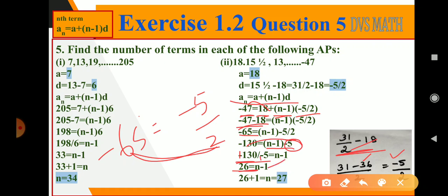Again minus 1 to the LHS. 26 plus 1, n is equal to 27, clear.